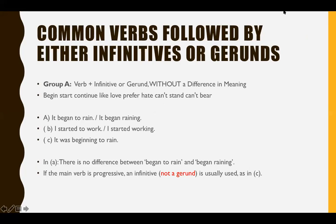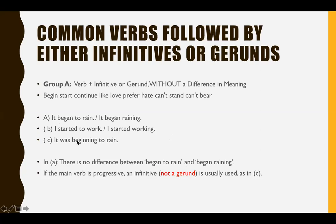Some verbs can be followed by either infinitives or gerunds with no difference in meaning: begin, start, continue, like, love, prefer, hate, can't stand, can't bear. For example: 'it began to rain' and 'it began raining' have the same meaning; 'I started to work' and 'I started working' are the same. However, if the main verb is in the progressive tense — present continuous or past continuous — it must be followed by the infinitive, not the gerund.